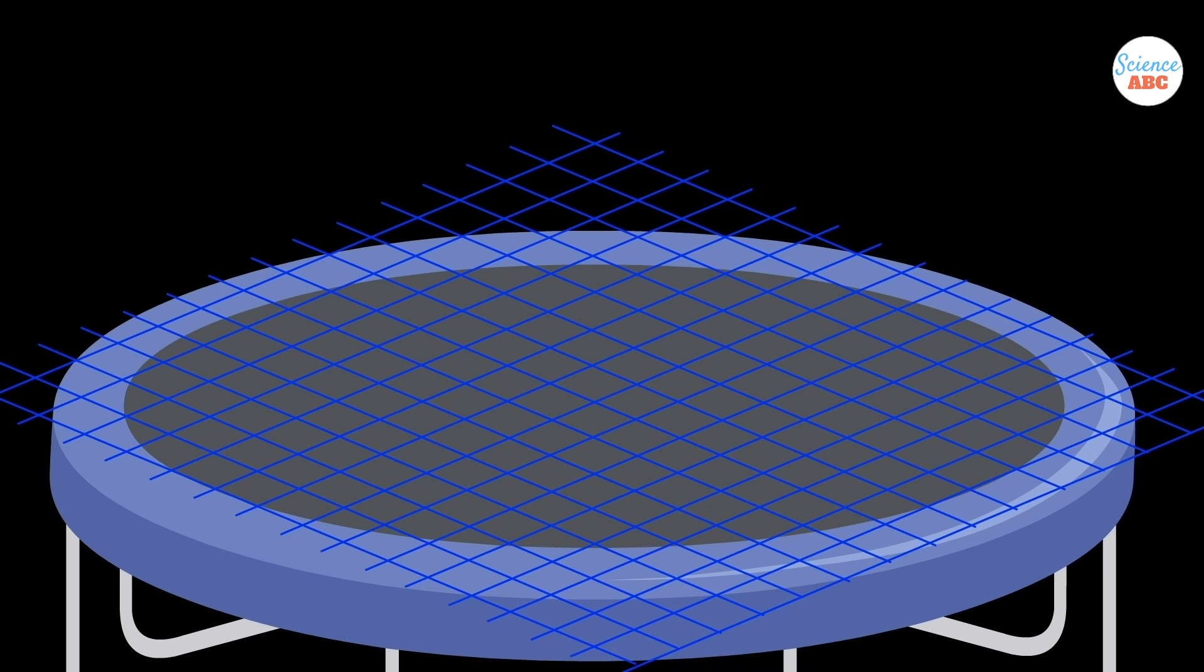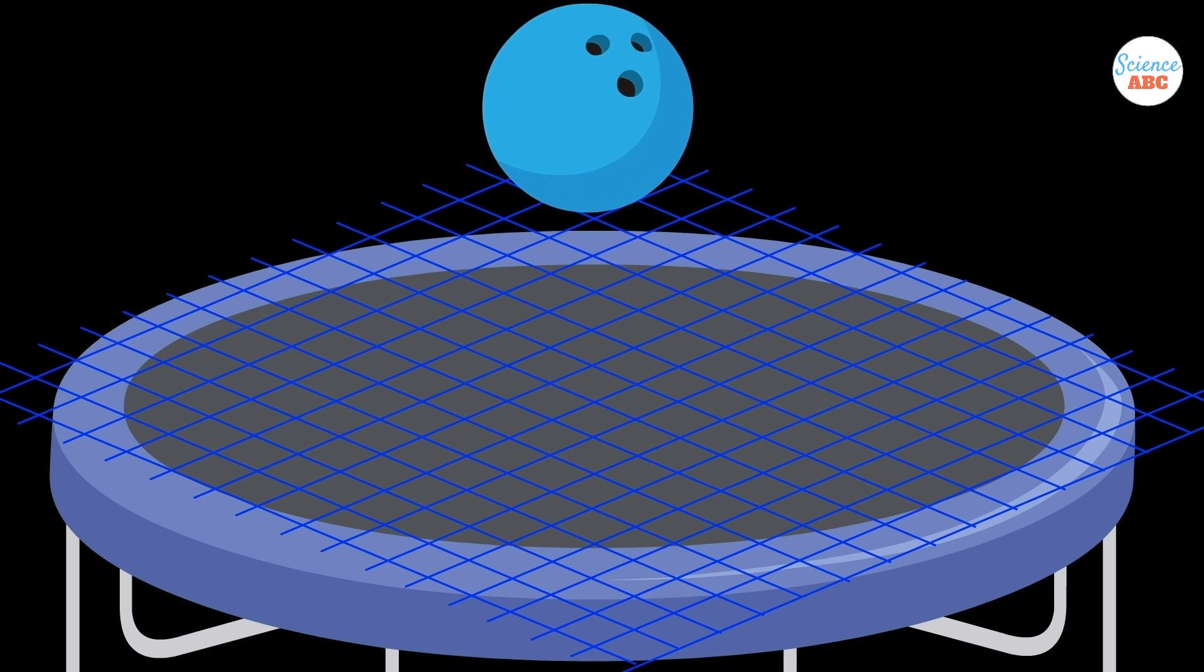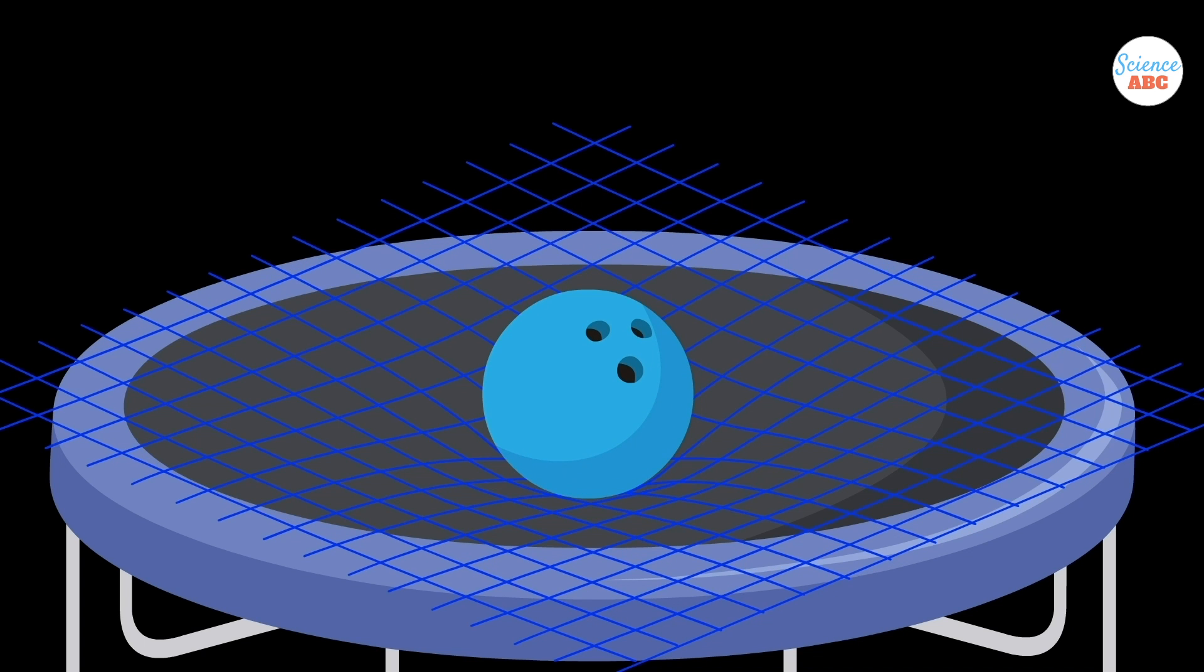This can be understood with the analogy of how a fallen ball on a trampoline curves or distorts the space around it.